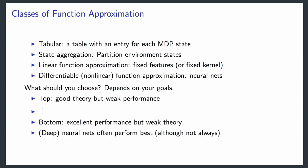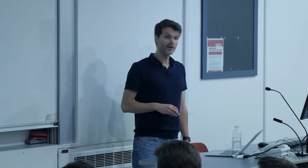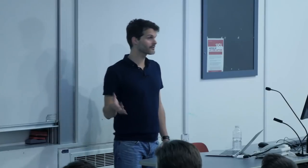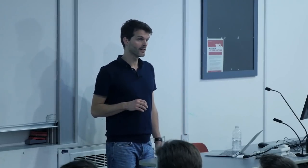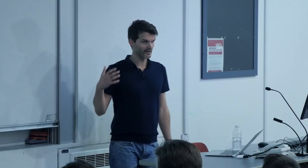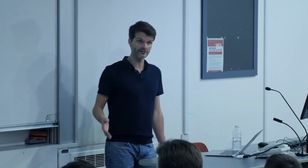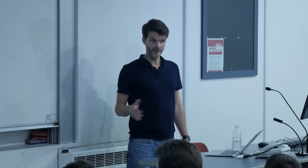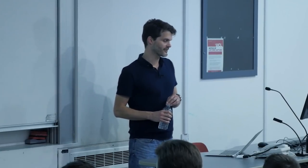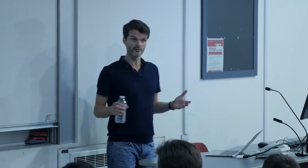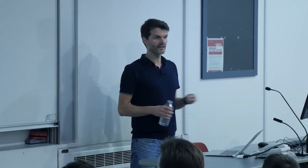More generally, you can do linear function approximation, which subsumes both the tabular and state aggregation cases. We define some features, and then hope we can learn a function that is accurate enough as a linear combination of those features. The benefit is that it's very well understood—we can say much more about convergence. It also tends to learn faster than arbitrary nonlinear function approximation, though it's highly dependent on the quality of your features.